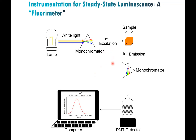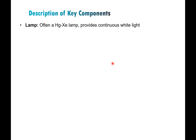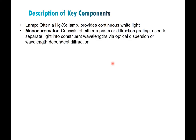The most common type of lamp is a mercury-xenon, which provides intense continuous light. Monochromators are very important on both the excitation and detection sides, and they'll be either a prism or a diffraction grating — all modern instruments use diffraction gratings. They separate light into constituent wavelengths. If you've ever held a prism up to sunlight and seen it produce a rainbow by splitting light into all the different wavelengths, that's basically what's happening in the monochromator — working via optical dispersion or wavelength-dependent diffraction.